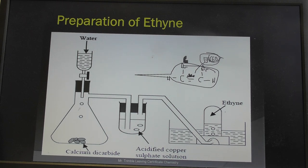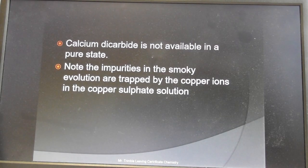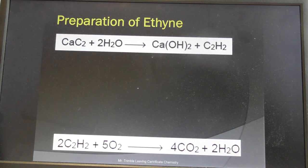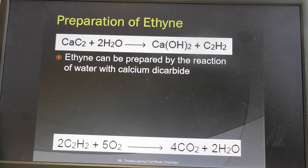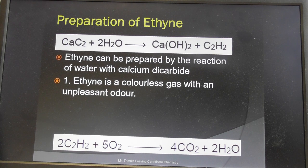Another test you can do is put a lit splint into the ethyne and you get a very sooty flame. Ethyne is prepared from CaC₂ — calcium dicarbide, 'dicarbide' meaning two carbons.